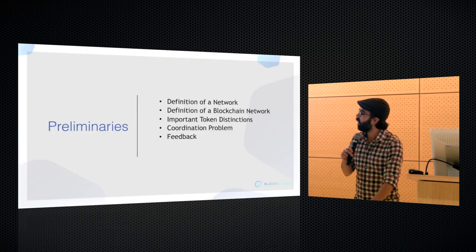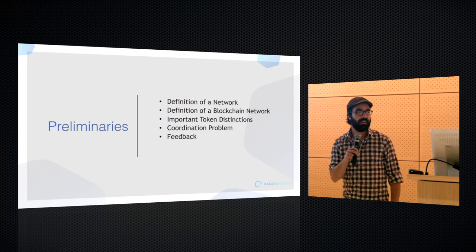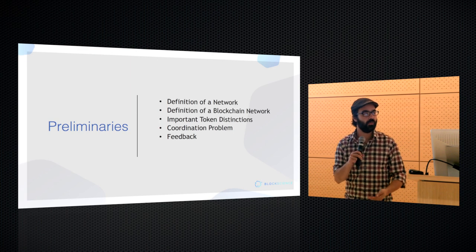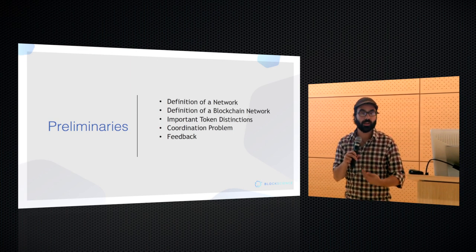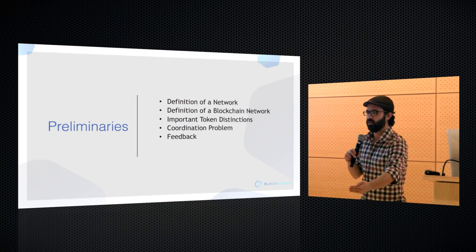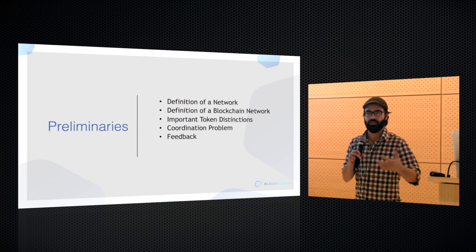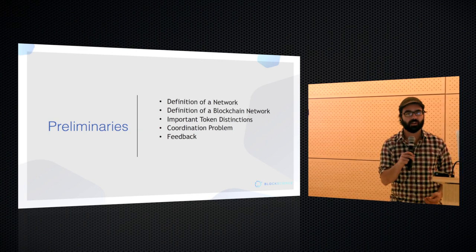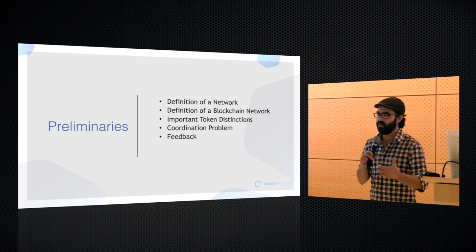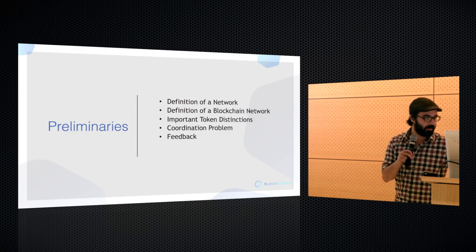We're going to start with definitions — things that are really important to get on the same page, speak clearly with one another, and be able to share solutions. In engineering, especially with mathematics involved, you have a canonical form of a problem — optimization or otherwise — and you start by mapping your definitions into usable ones. We're going to do that with the term 'network.'